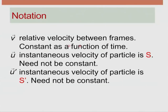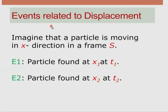The u symbol is reserved for the particle velocity and the v symbol for the relative velocity between the frames. Now we talk about two events using Lorentz transformation to find the velocity. Event 1: sitting in frame S, at time t1 the particle is at position x1. Event 2: at time t2 the particle is at position x2. Another observer in S prime finds the same events at x1 prime, t1 prime and x2 prime, t2 prime.